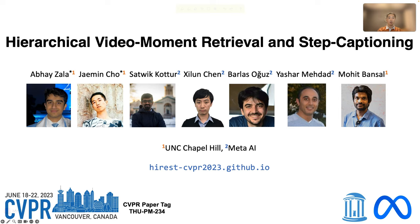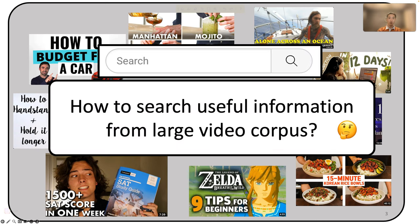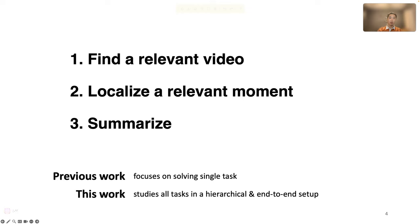Our work proposes a hierarchical benchmark of multimodal information retrieval and summarization from a video corpus. With the easy access to smartphones, recording software, and video hosting platforms, every day people are collecting numerous videos of all kinds. How can we quickly search useful information from large video corpora? This could be done by finding the right video, localizing the relevant moment inside the video, and summarizing the information. While previous work focused on solving one of these tasks, in this work we study all tasks in a hierarchical and end-to-end setup.